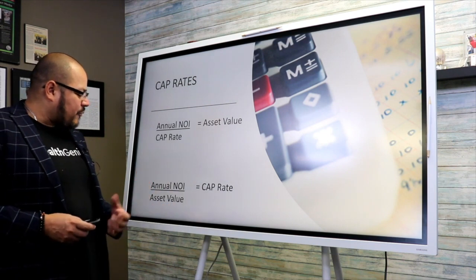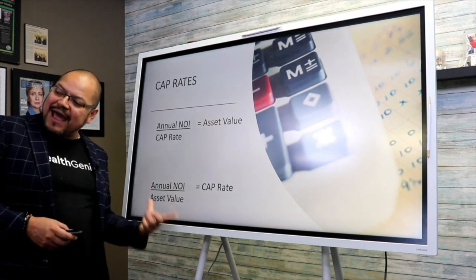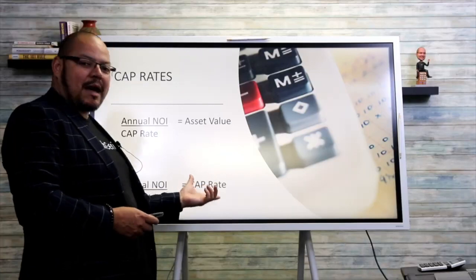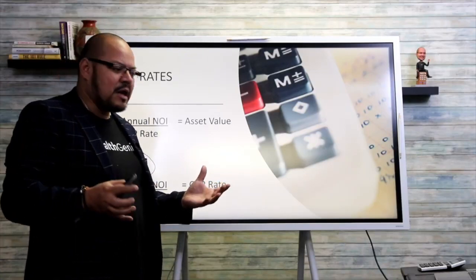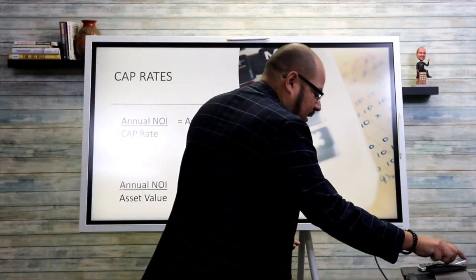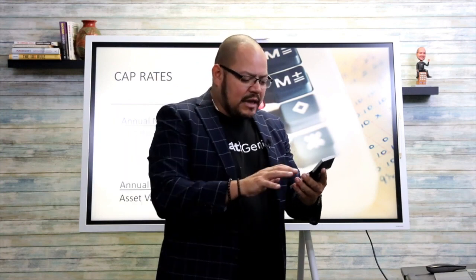If you take the annual net operating income and divide it by your asset value, you get your cap rate. It's very simple — you don't have to be a math wizard to figure this out. Get your handy dandy calculator. Let's say it's $40,000 a year in annual net operating income, and you divide it by a 5% cap rate. That means the value of this asset is $800,000.